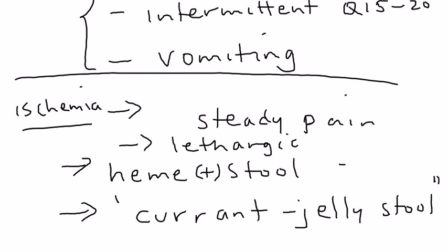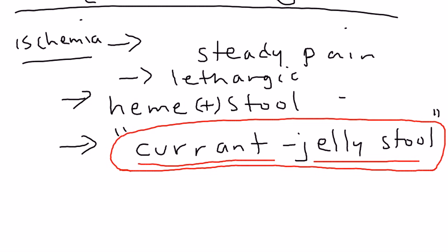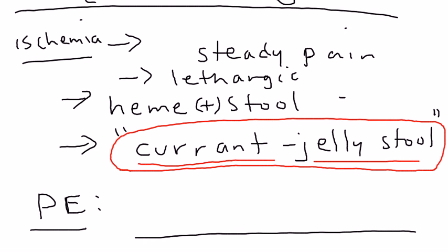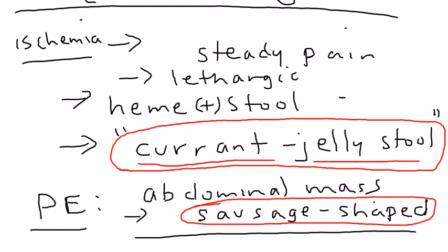For those preparing for licensing exams, there are buzzwords or high-yield keywords. 'Current jelly stool' — stool mixed with blood and mucus — is a very big keyword for intussusception and is often tested on licensing exams. Another important keyword from physical exam is that the abdominal mass that can be palpated is called a 'sausage-shaped mass.' Remember both of those important buzzwords.